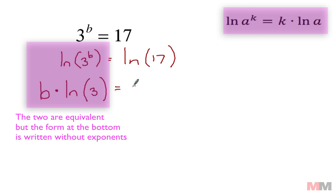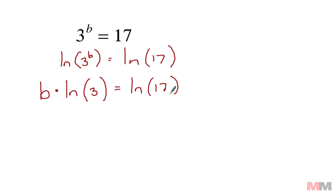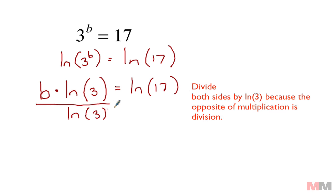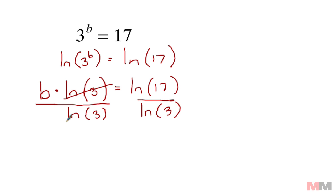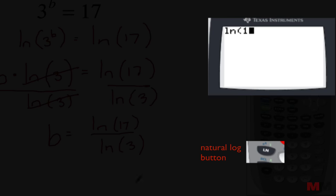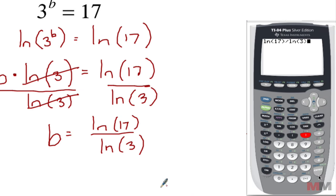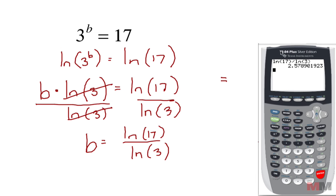b times the natural log of 3 equals the natural log of 17. To get rid of this part, that's just some number on your calculator, you can divide both sides by the natural log of 3, which will cancel this part out on the left side. And now I got b equals the natural log of 17 divided by the natural log of 3. Pop that in the calculator: the natural log of 17 divided by the natural log of 3.